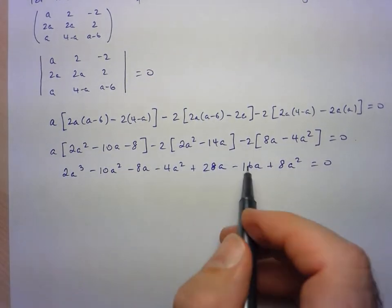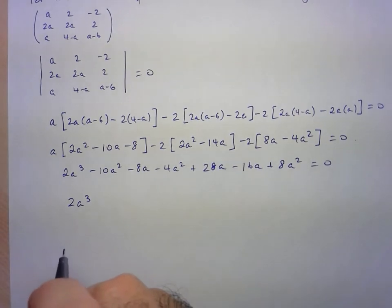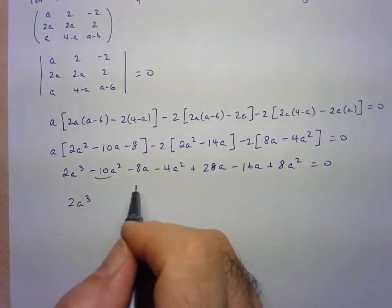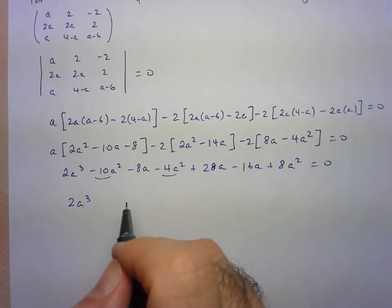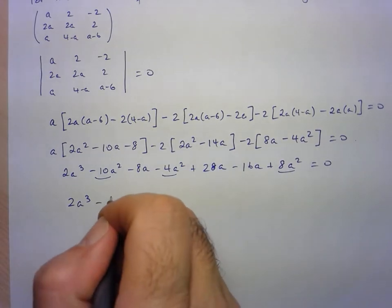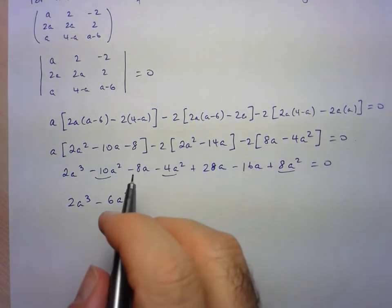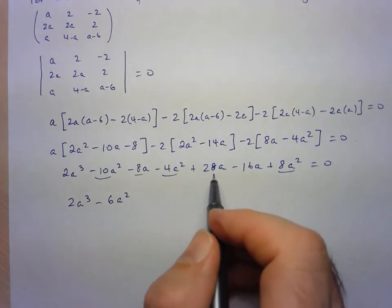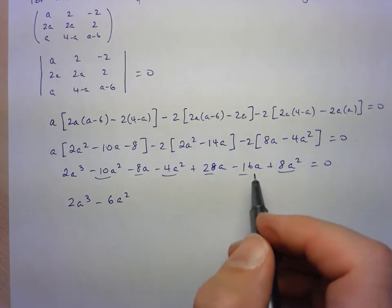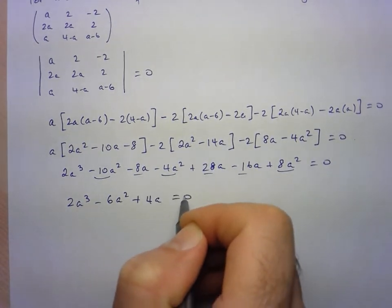All right, so only one cubic term, so 2A cubed. Let's look for the quadratic term. So here we've got negative 10 minus 4 is negative 14, plus 8. That's going to be minus 6A squared. And let's look for the A terms. So we have negative 8 plus 28 is 20, minus 16 is going to be plus 4A. And that's everything, so equals zero.